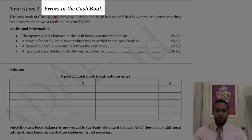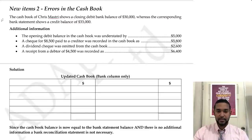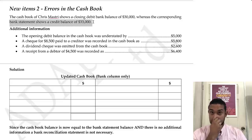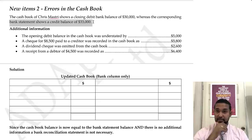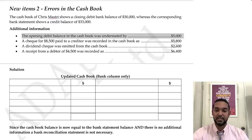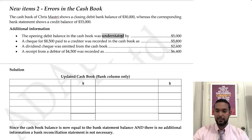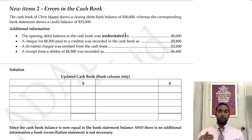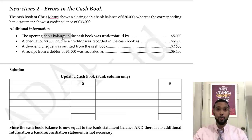Now let's look at errors in the cash book. The cash book of Christmas Tree shows a closing debit bank balance of $30,000, whereas the bank statement shows a credit balance of $33,000 — so there's a difference. Looking at the additional information: the opening debit balance in the cash book was understated by $5,000. Understated means the amount stated was under or below the actual amount it should have been — it was too low.